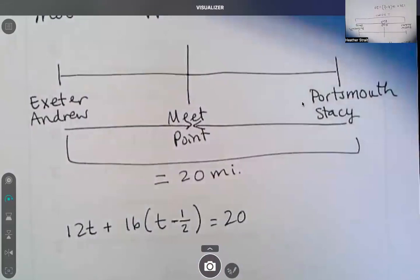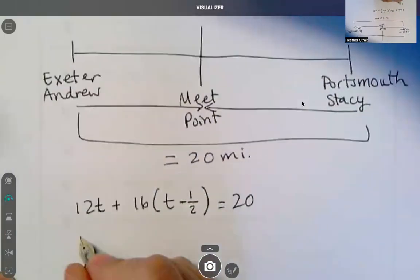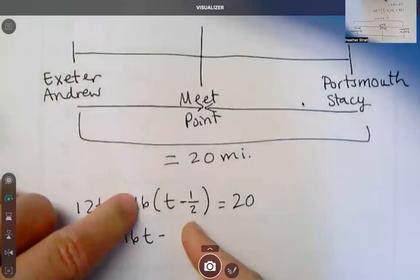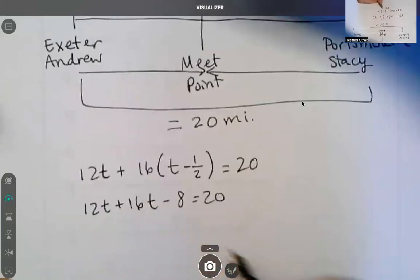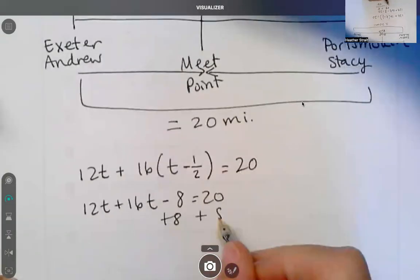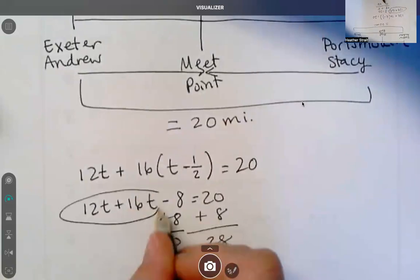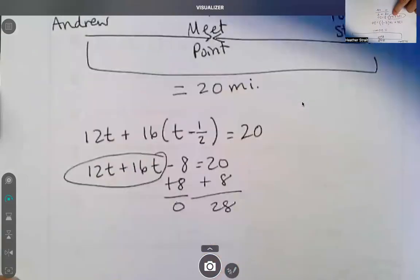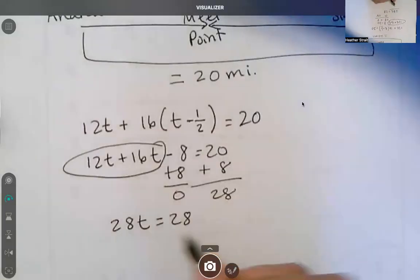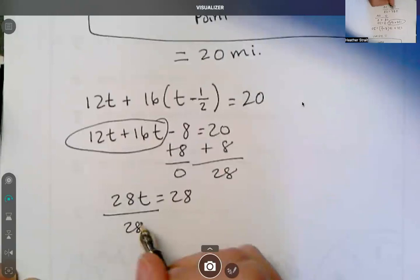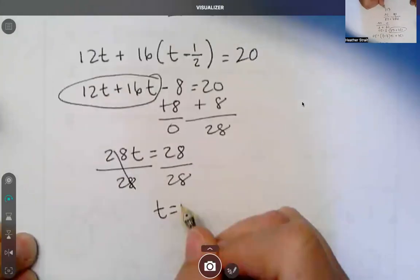Okay. So 12T plus 16T minus 8 equals 20 plus 8, 28T equals 28. So T equals 1.